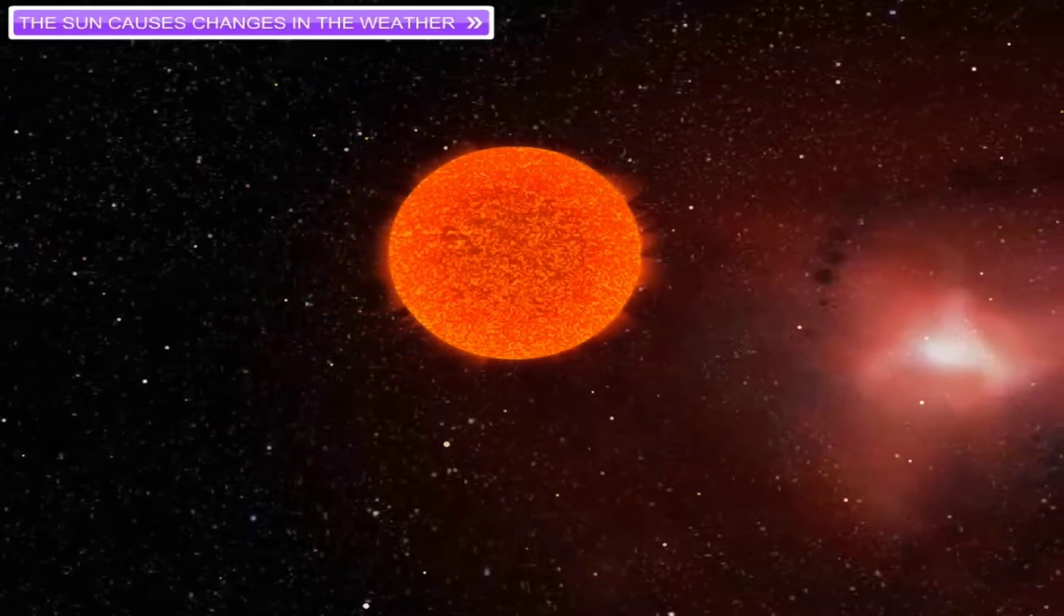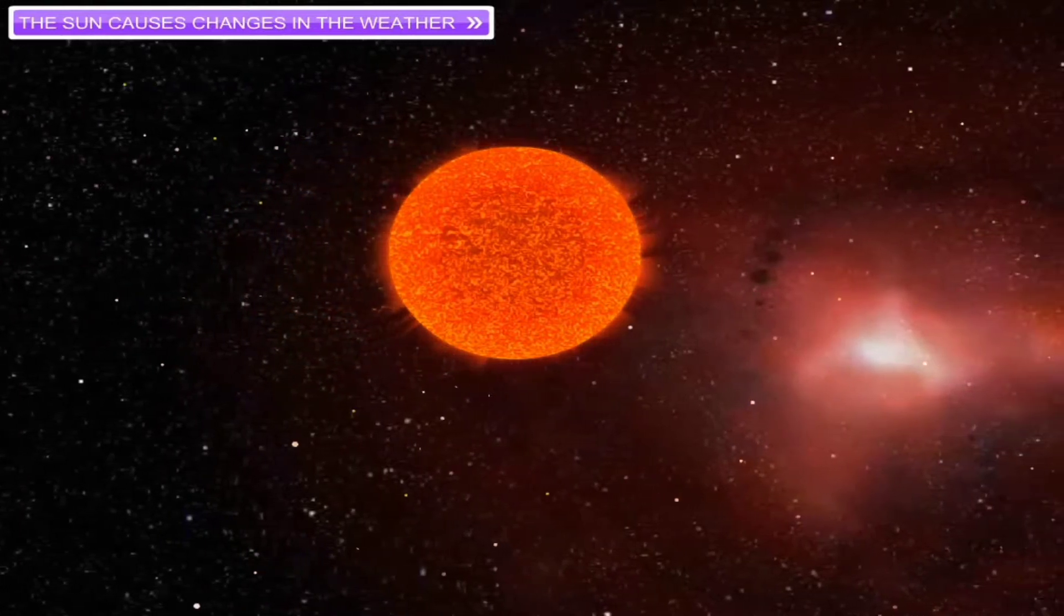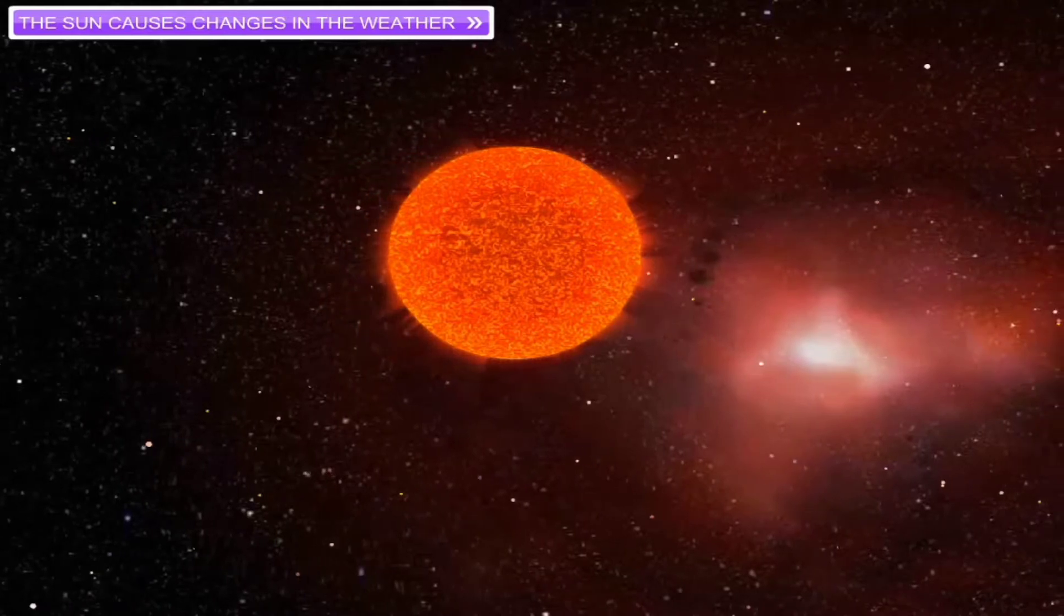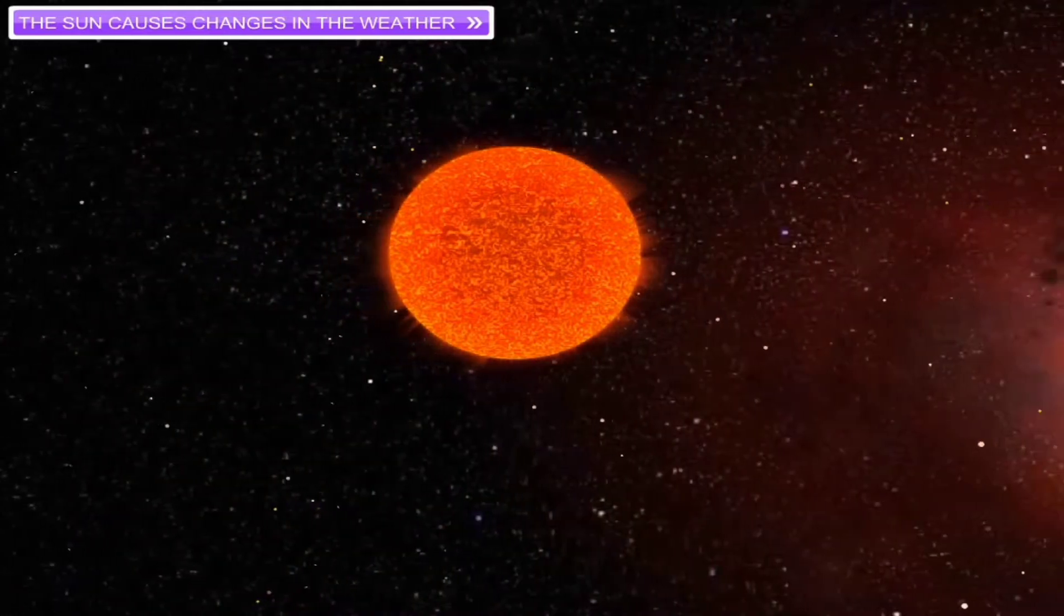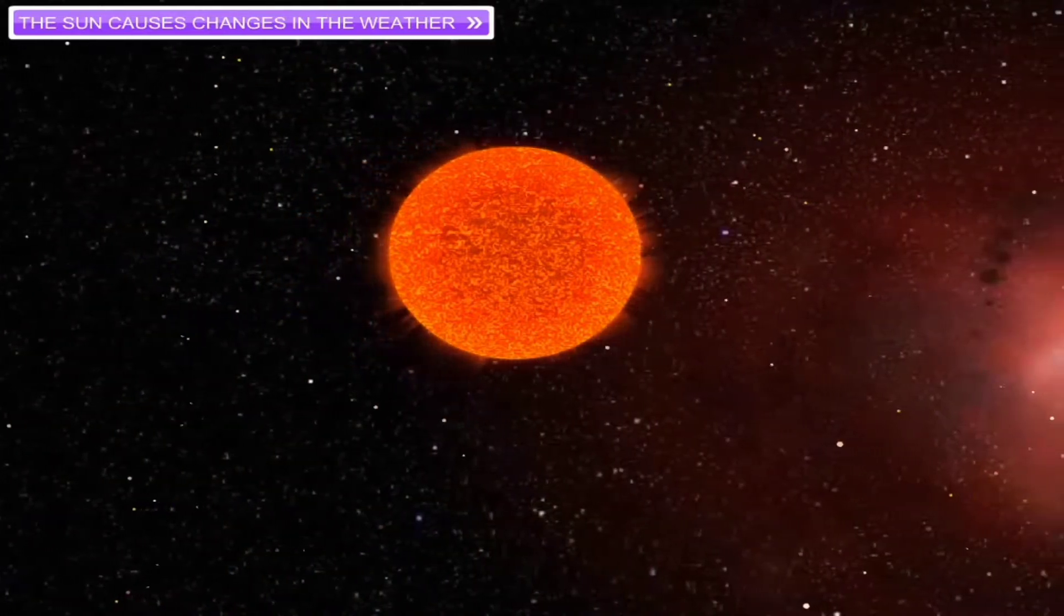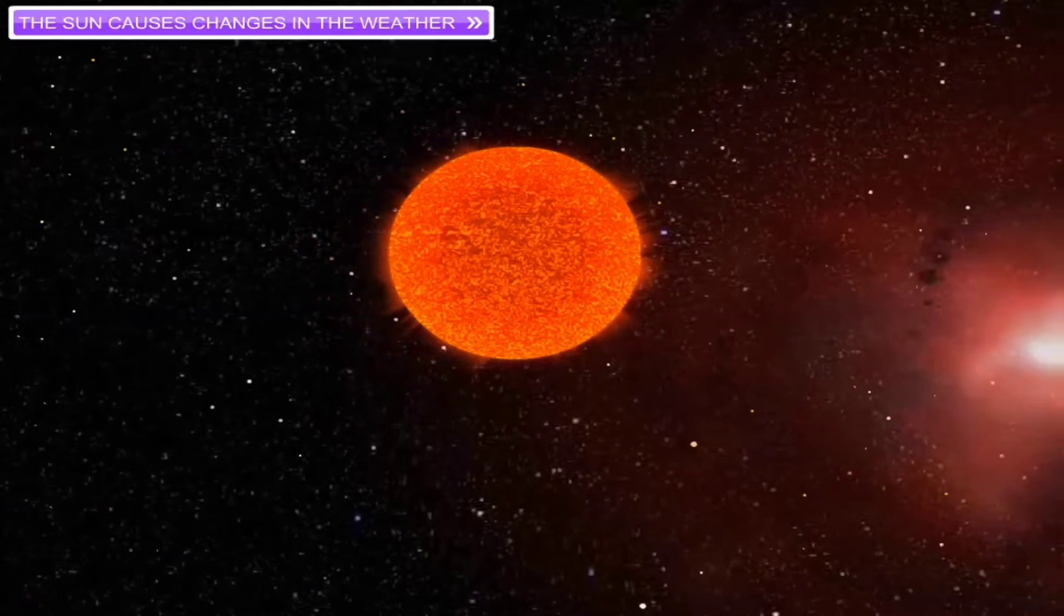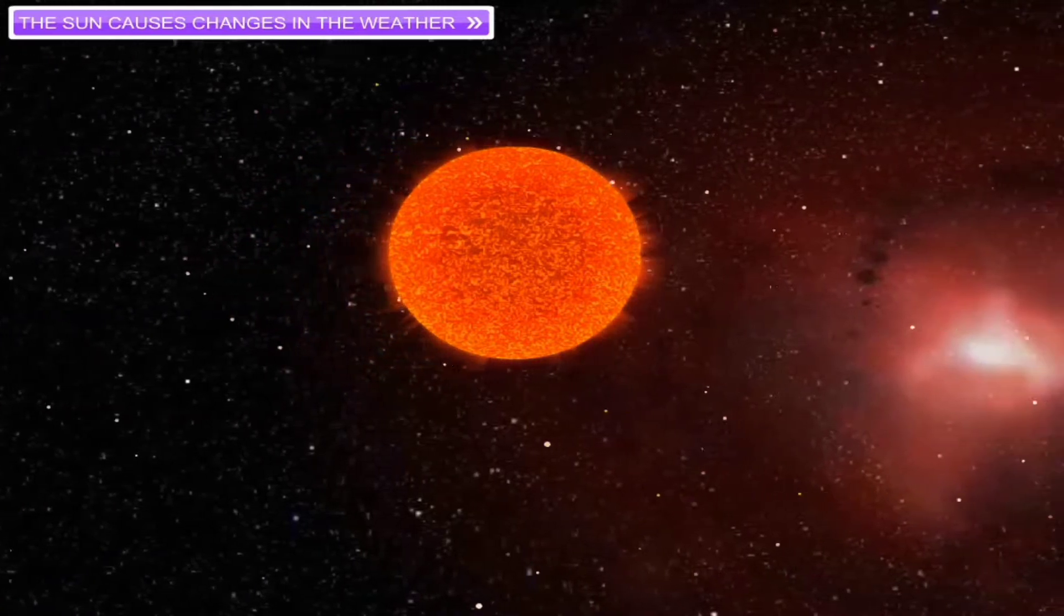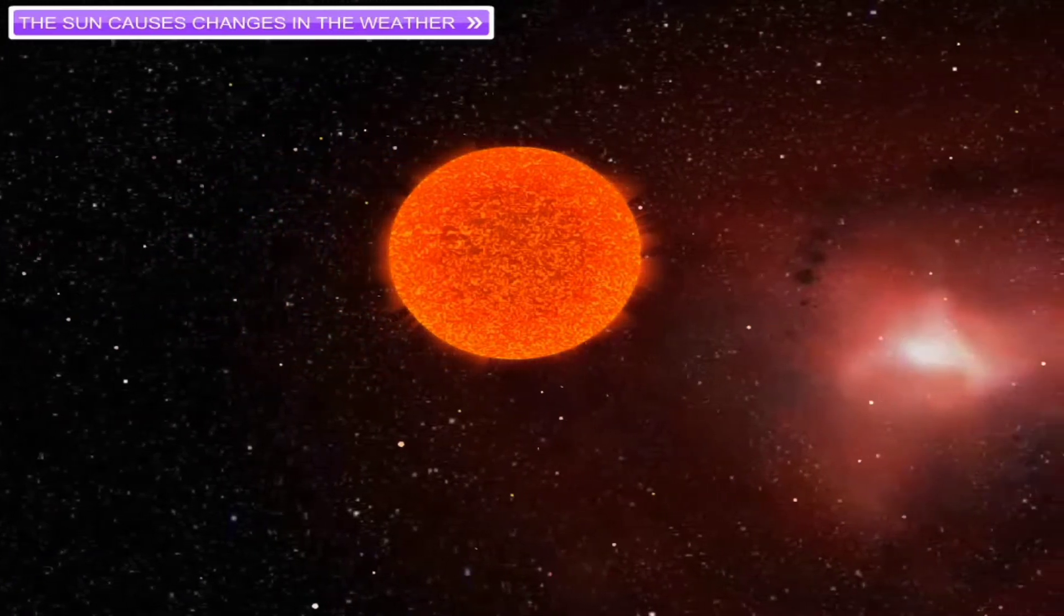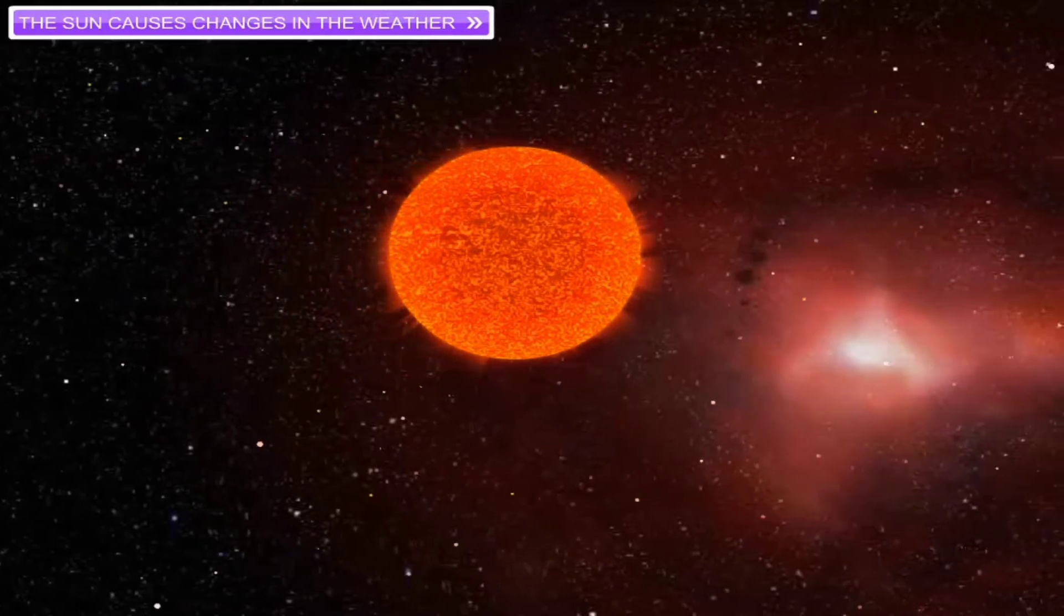The sun is a huge sphere of hot gases at a very high temperature. It is the source of all heat and light on the earth.